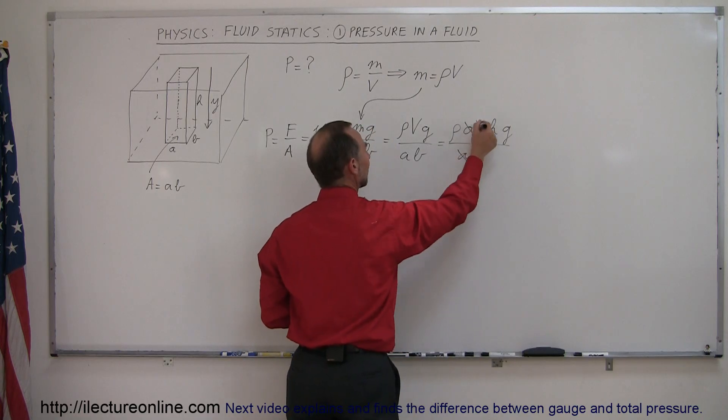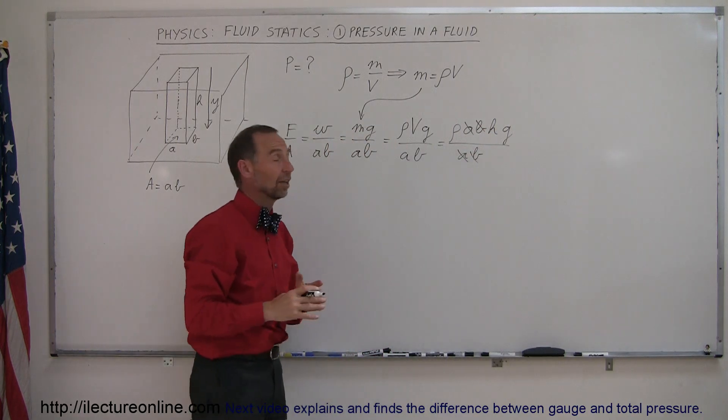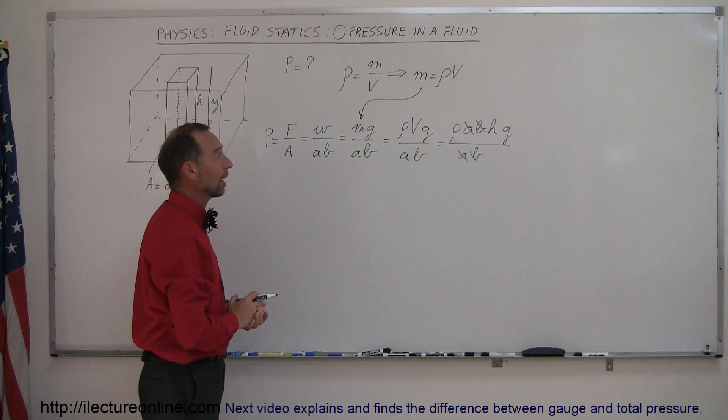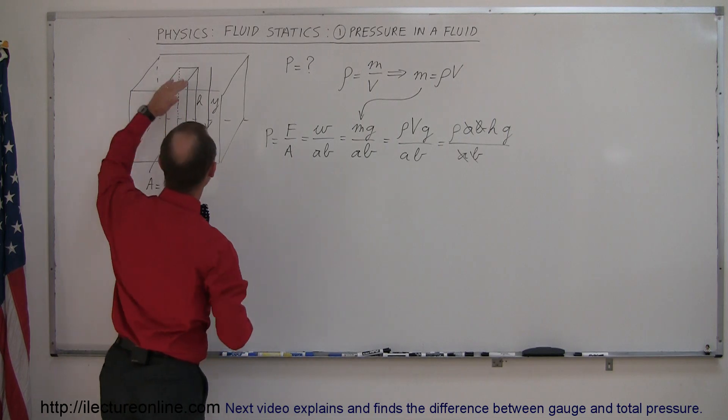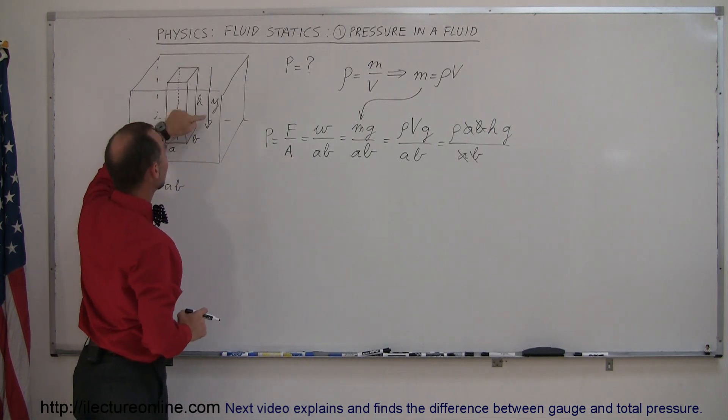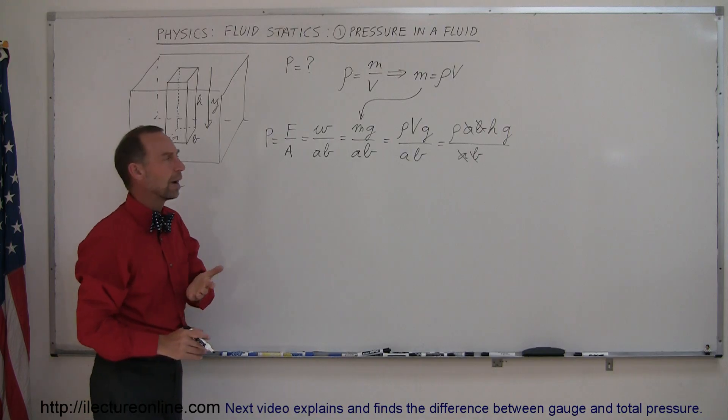And then right away, you can see that A and B cancels out. With other words, it's per unit area that gets canceled out. And then since the height of the column is equal to the depth of the pool, we can then replace H by Y.